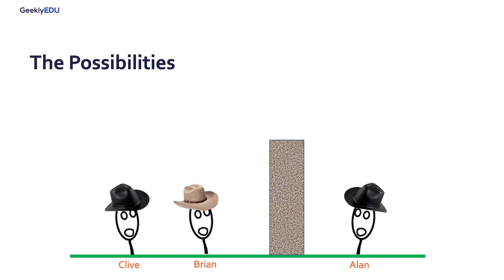For Clive, he's able to see Brian's hat, so in his perspective, there are three possible combinations, so he's not certain about his own hat.